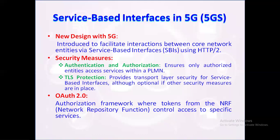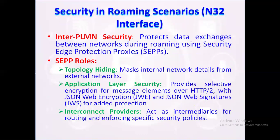To secure data transmission, transport layer security (TLS) is widely used across service-based interfaces, although some operators might opt for physical security instead. Additionally, the OAuth 2.0 framework manages authorization for service requests by providing tokens through the NRF (network repository function), which grants service-specific permissions, reinforcing controlled access within the 5G network ecosystem.